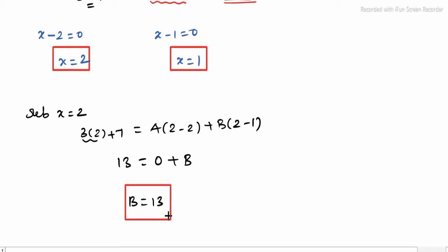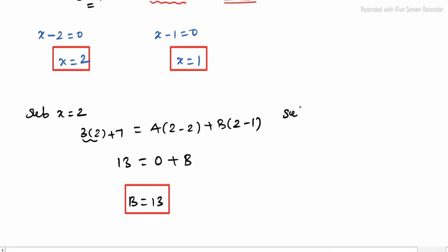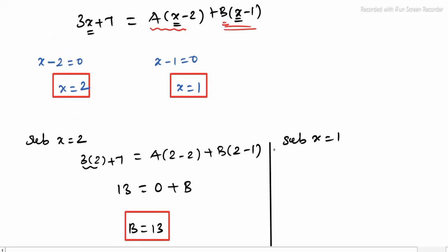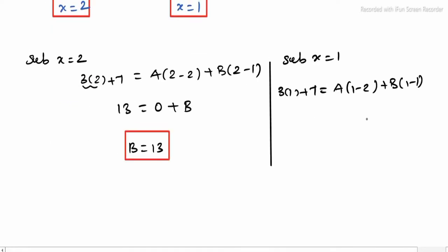Now find A. Apply x = 1 (from x minus 1 = 0, x = 1). Substituting x = 1: 3(1) + 7 = A(1 minus 2) + B(1 minus 1). That gives 10 = A(minus 1) + 0. So minus A = 10, finally A = minus 10.